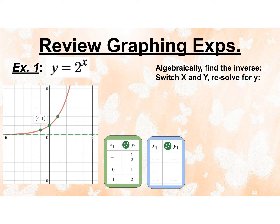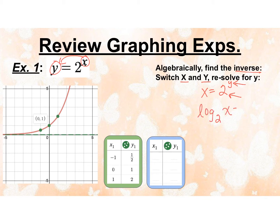We're going to find the inverse of this exponential. Finding the inverse involves switching the x and the y — literally just switching their places. So I'm going to say x equals 2 to the y. Now I need to solve for y, but y is up in the exponent, so I'm going to need some logarithms. My base is 2, so I'm going to rewrite it in log form using a base of 2. So I have log base 2 of x equals y, which I'll rewrite as y equals log base 2 of x. Since the inverse just switches x and y, I can swap the values in my table.